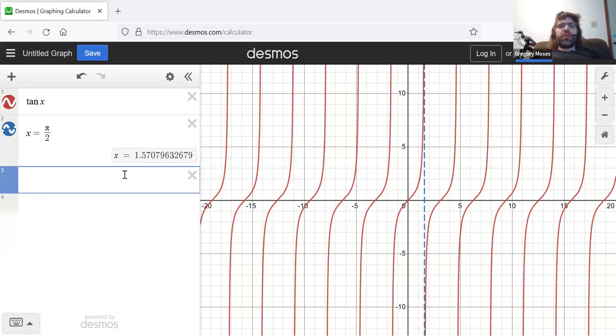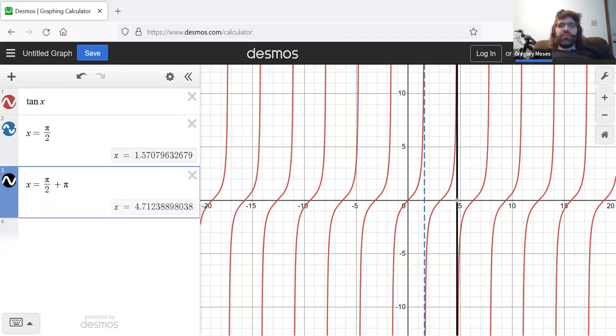And because the cosine is zero at infinitely many values, this tangent curve has infinitely many vertical asymptotes. Reading from left to right, the next vertical asymptote is going to occur at x equals pi over 2 plus pi.